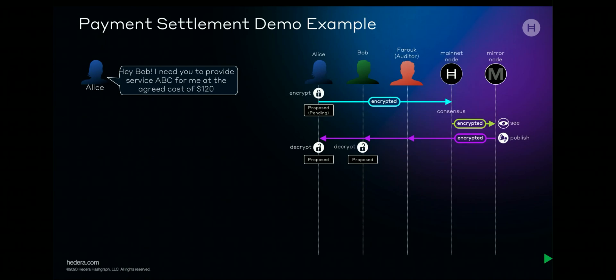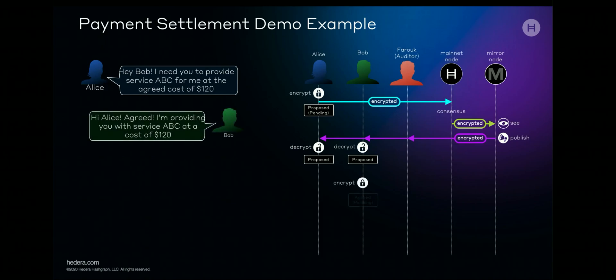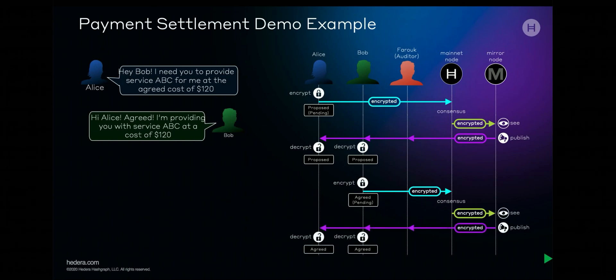Mirror nodes see the new message and publish it to topic subscribers — Alice, Bob, and Farouk, our auditor. The messages are then decrypted. When Alice sees her own message, she knows it has reached consensus. Bob then replies to Alice acknowledging receipt of the message. He does so by submitting another encrypted message to the same HCS topic on a Hedera mainnet node, and the same process occurs.